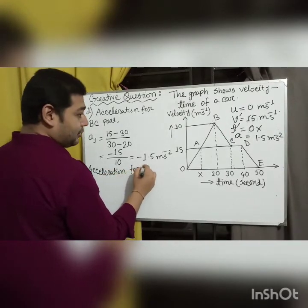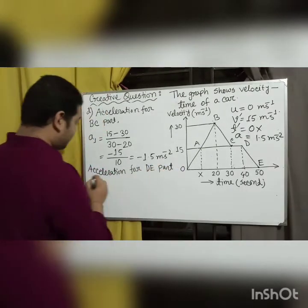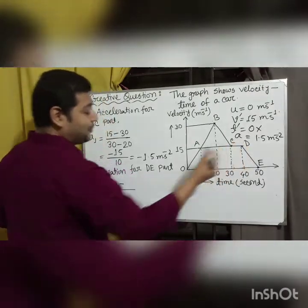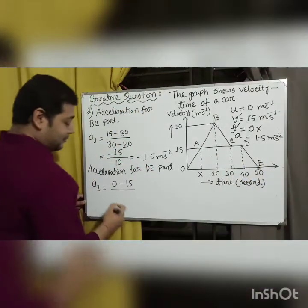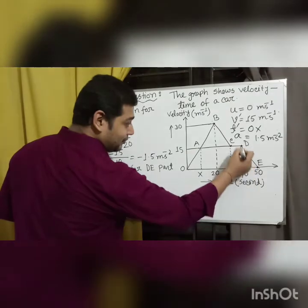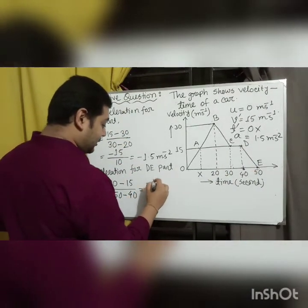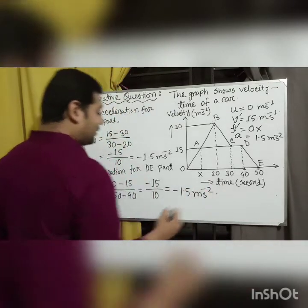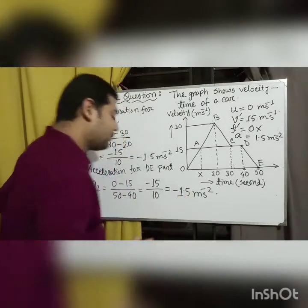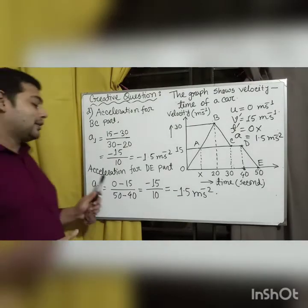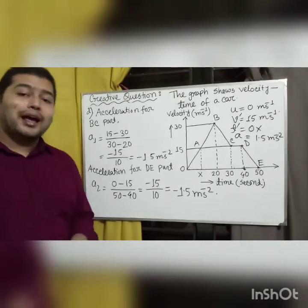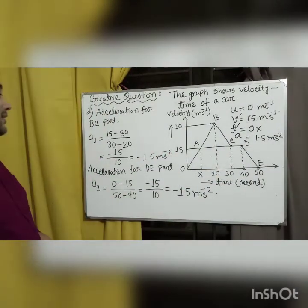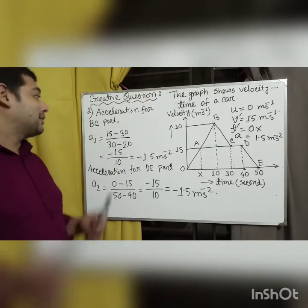For the DE part, A₂ equals (final velocity minus initial velocity) divided by time. Final velocity is 0, initial velocity for DE is 15 m/s, final time is 50 s and initial time is 40 s. So A₂ equals (0 minus 15) divided by (50 minus 40), which equals minus 15 divided by 10, again giving minus 1.5 meters per second squared. So for both BC and DE, the deceleration is the same.